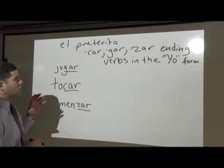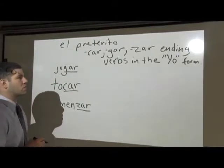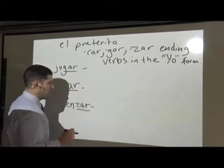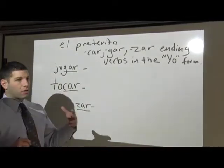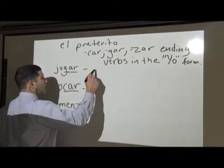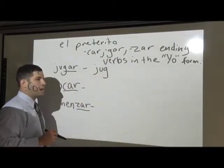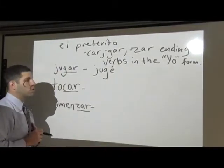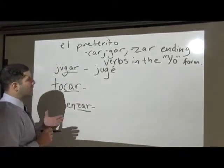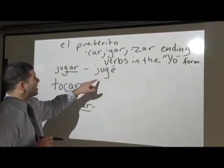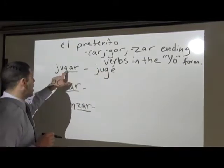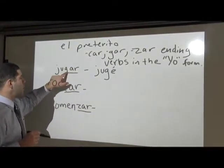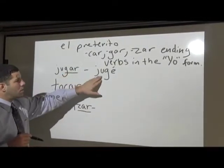The issue with these verbs in just the yo form — just the first person singular — is that if you conjugate them according to the regular endings from the previous video, you have the stem plus ending. The ending would be É. So if you pronounce jugar by the regular rules of Spanish pronunciation, you miss that whole hard GA sound. We want to maintain that hard G, so this is all about pronunciation.